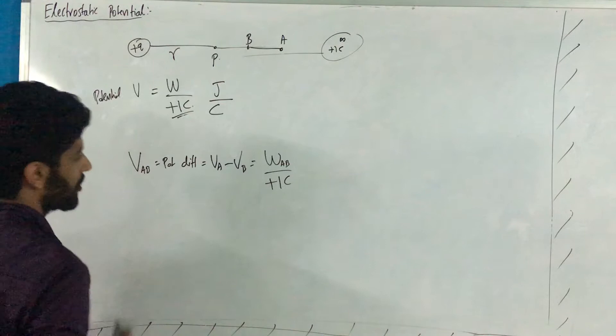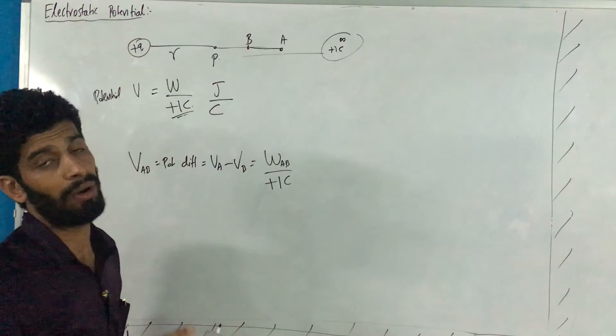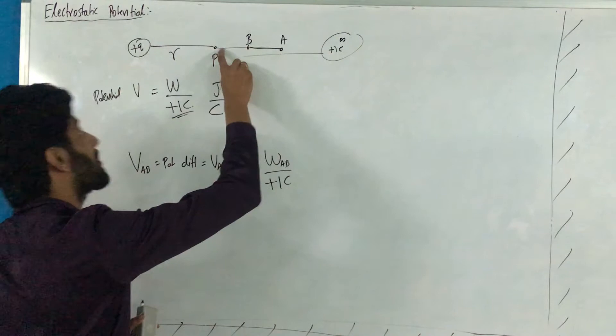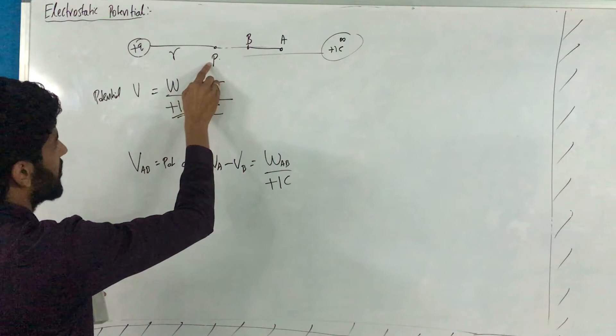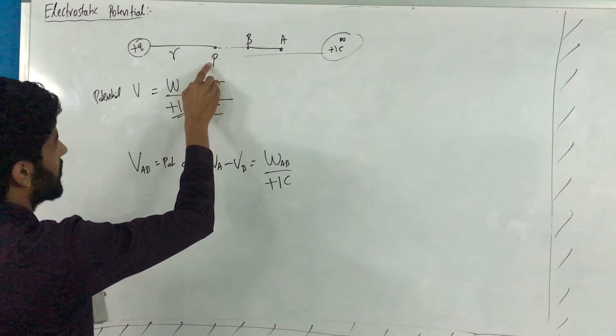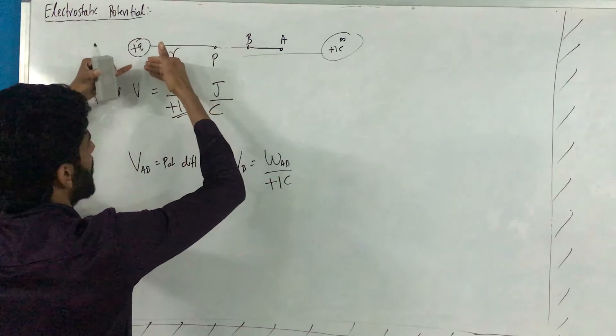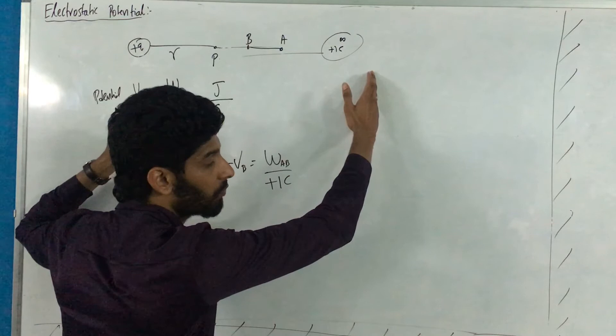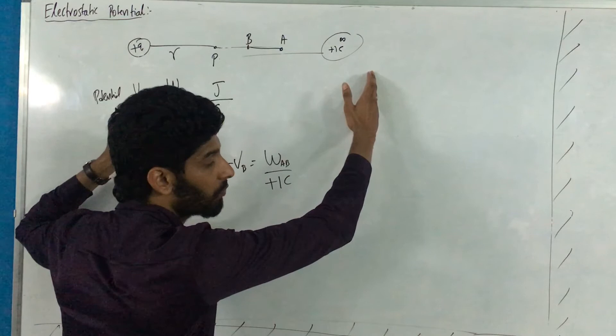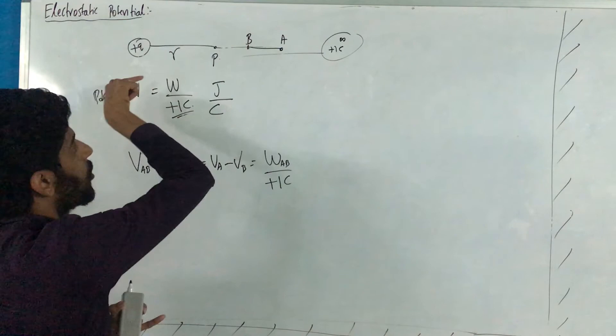Now I want to tell you what is the expression for electrostatic potential at point P because of this charge. I am finding out the work, and that work is exactly equal to the potential at this point because of this charge. As the point P is closer to the charge, I have to do more work; as it goes farther away, I have to do less work. That means the electrostatic potential decreases as you go away from the charge. The expression for electrostatic potential at point P will be covered in the next video. Thanks for watching. Thank you.